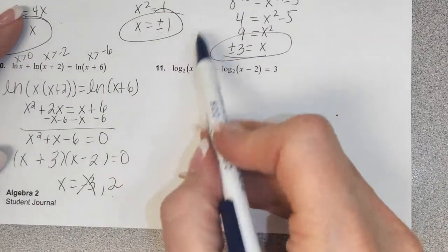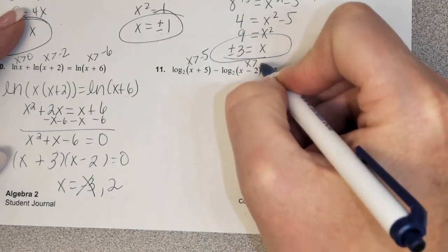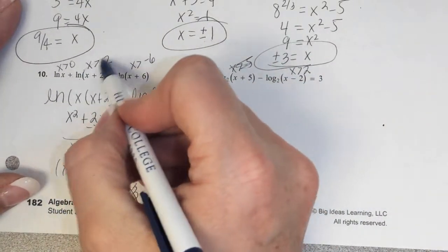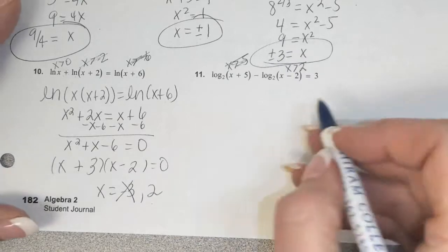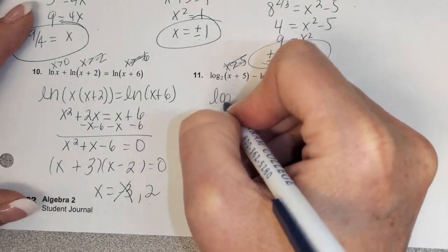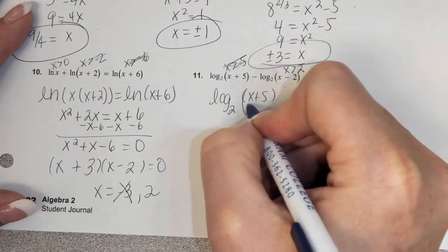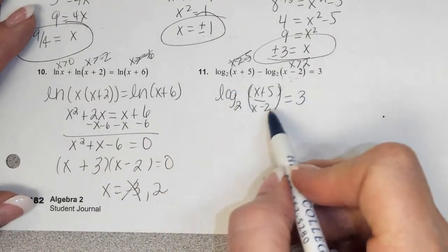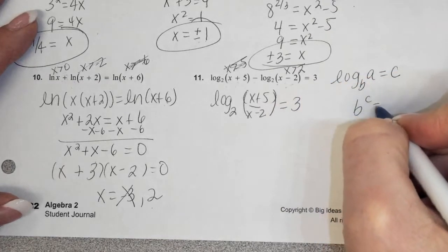For this problem, let's talk about x's domain first. x must be greater than negative 5, and x must be greater than 2, so the binding restriction is x greater than 2. When we have two logs and subtraction, we condense by turning it into division. Now we have a single log equation: log base b of a equals c means b to the c equals a.